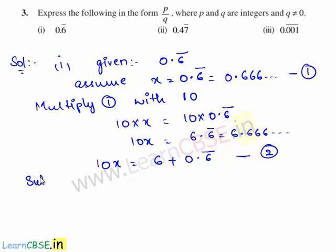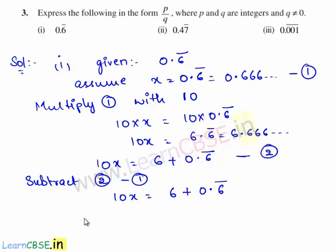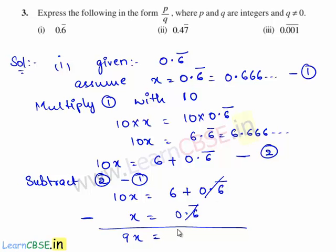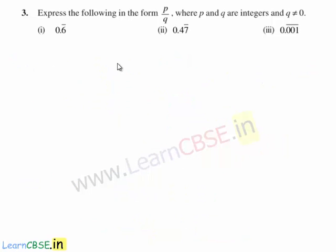Now we shall subtract equation 1 from equation 2. So 10x minus x is equal to 9x, and 0.6 bar gets cancelled, leaving us with 6. Therefore 9x is equal to 6, giving x is equal to 6 by 9. Since 6 and 9 are multiples of 3, we cancel out the common factor and are left with 2 upon 3.